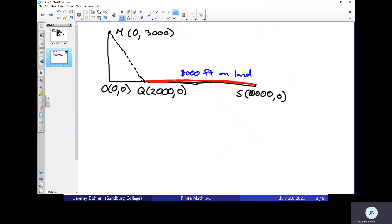And this is 8,000 feet on land. We know that the cost of laying cable is $3 per foot on land. And we also know that the cost of laying cable is $5 per foot underwater. Okay, and then the other piece of cable we want to lay is right here.